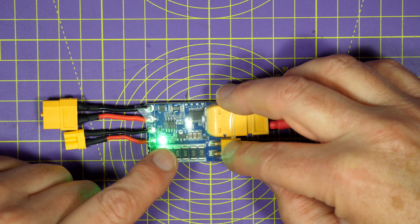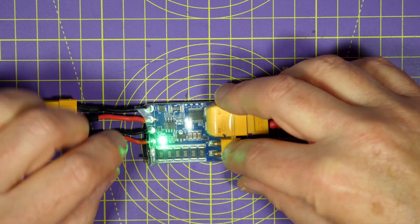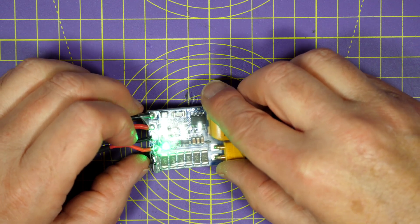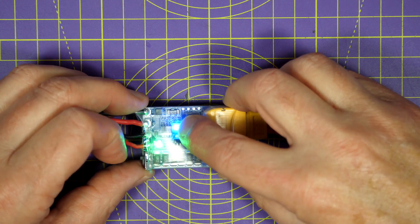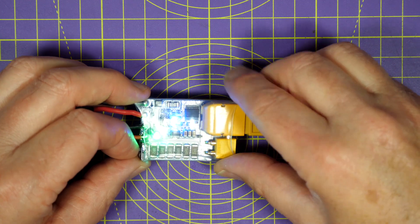When the green light comes on that means it's good to go. This defaults to one amp current limit, but you can use this little switch on the side here to change that to 2 amps. When the blue LED's on that means it's on 2 amps.